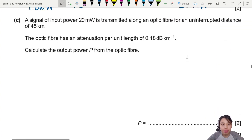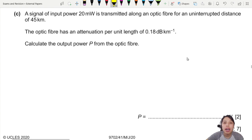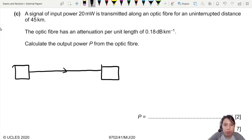Last part. A signal of input power 20 mW is transmitted along an optic fiber for an uninterrupted distance of 45 km. The optic fiber has attenuation, yes of course. Calculate the output power P. Whenever I'm doing this question and get confused, I will draw a picture to help me think. Drawing the picture also helps you understand why it's happening. So I'm transmitting an input of 20 milliwatt coming in, and it goes along the long wire, 45 km.